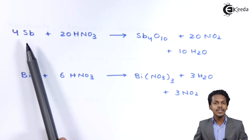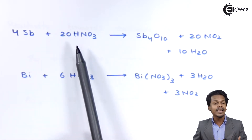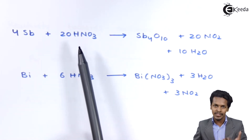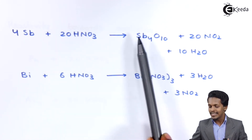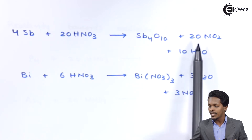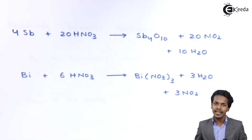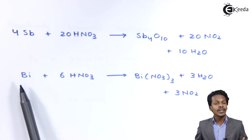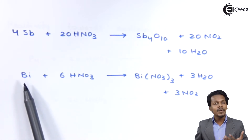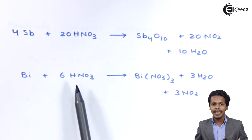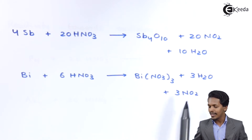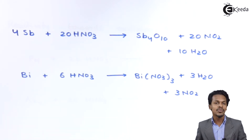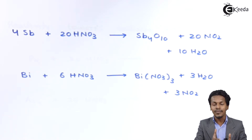Suppose we use antimony and react it with 20 moles of hot and concentrated HNO3. The product we could get is antimony oxide along with 20 moles of NO2 and H2O as a by-product. And if bismuth is reacted with hot and concentrated HNO3, it will produce bismuth nitrate along with water and 3 moles of NO2. This was the reaction of group 15 elements with nitric acid.